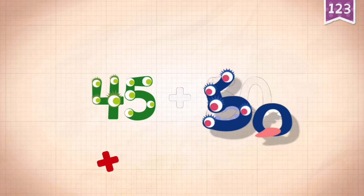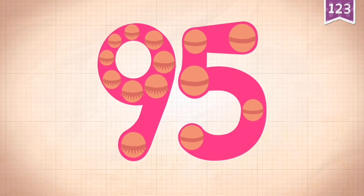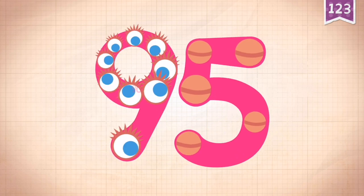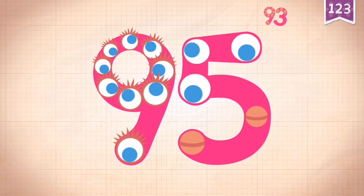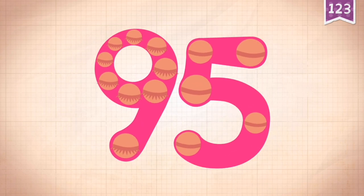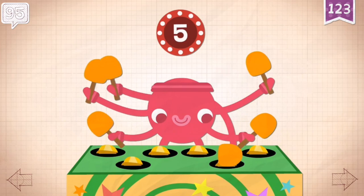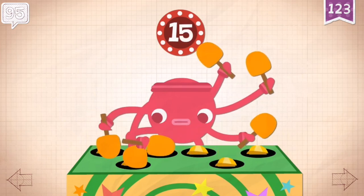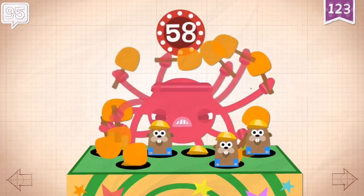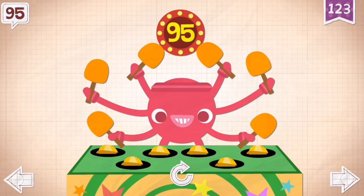45 plus 50 equals 95. Touch the numbers: 10, 20, 30, 40, 50, 60, 70, 80, 90, 91, 92, 93, 94, 95. Sonny whacked 95 moles for the top score!